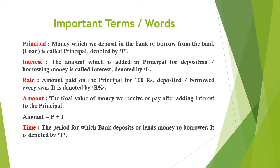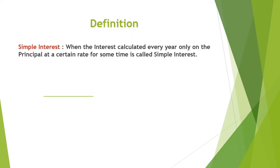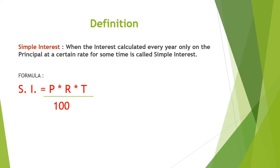Time: the period for which we deposit in the bank or the bank lends money to the borrower is called Time, denoted by T. The definition of simple interest is: when the interest is calculated every year on the principal at a certain rate for some time, it is called simple interest. The formula is: Simple Interest = Principal × Rate × Time ÷ 100, i.e., SI = (P × R × T) / 100. By modifying this formula, we can also find Principal, Rate, or Time — the 100 moves up to multiply with SI.